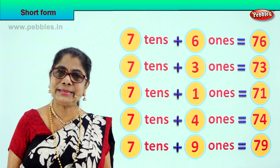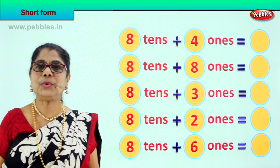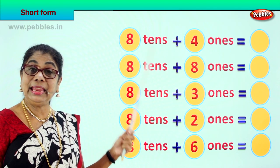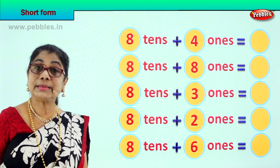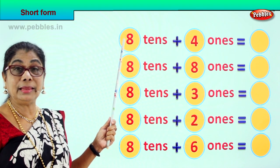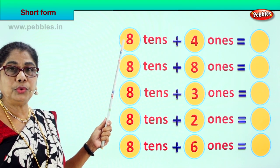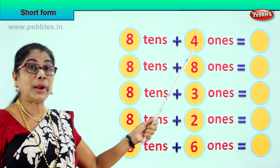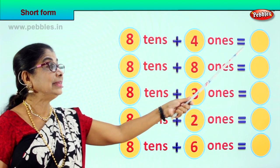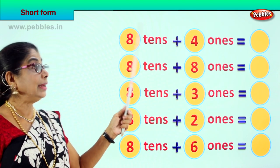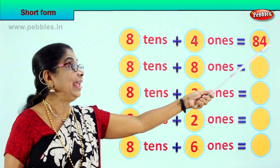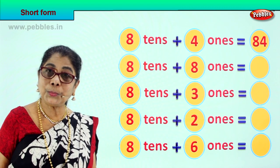Shall we take another exercise? Look, see what we have here. Now we have 8 tenths. What is 8 tenths? Good, 80. 8 tenths are? 80. Let's read together and do the short form. 8 tenths plus 4 ones. That is 80 plus 4 is equal to? 8 tenths plus 4 ones is equal to? Good, 84. 8 and 4? 84.